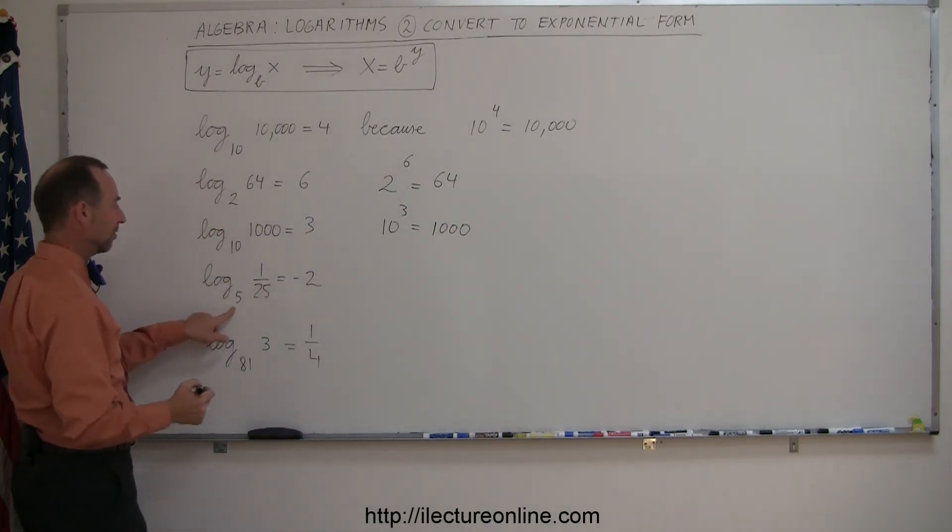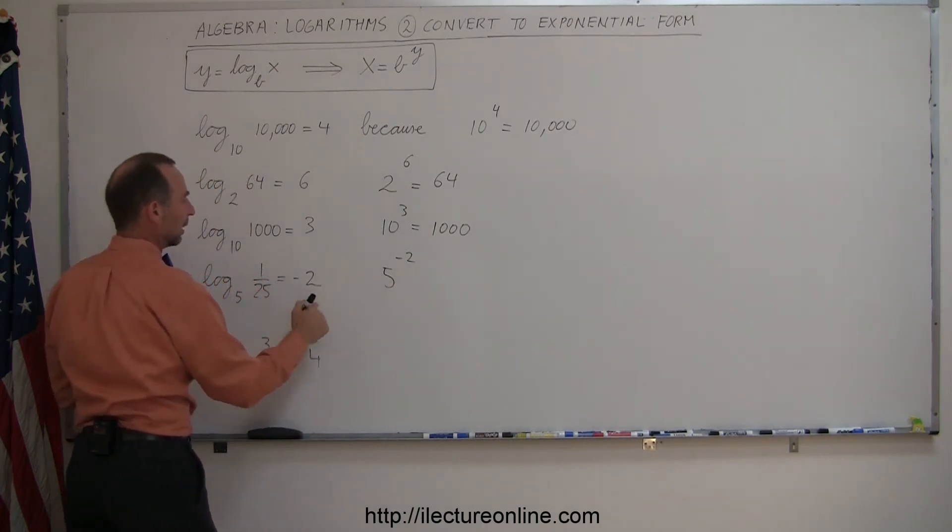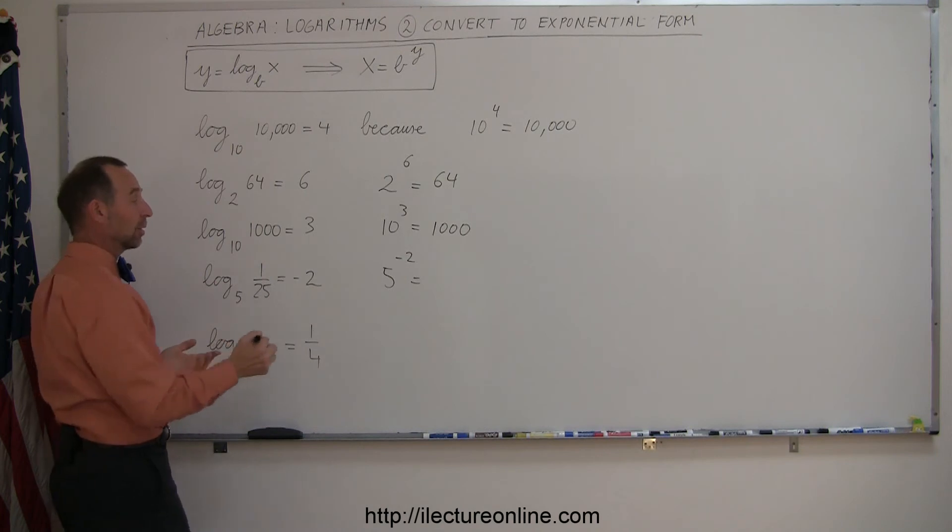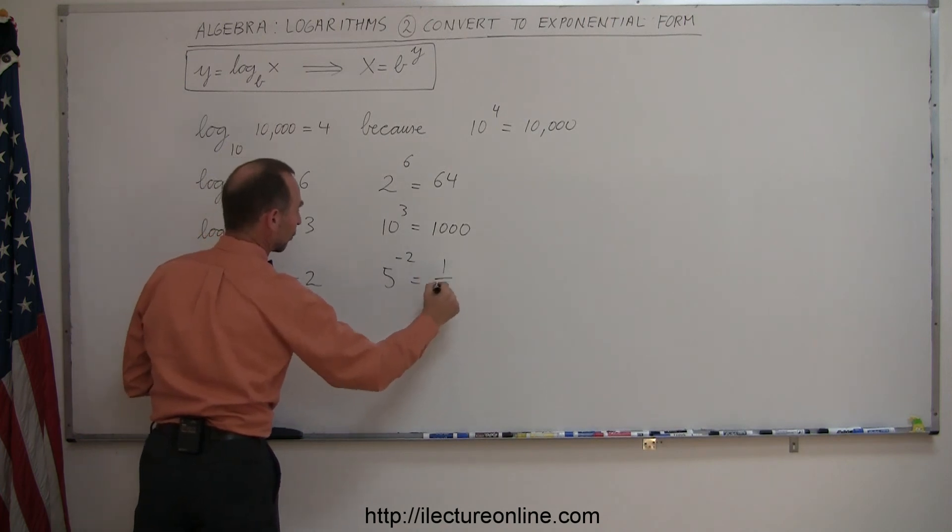And over here, we take the base and raise it to the minus 2 power. So we raise it to this power right here, and that should equal 1 over 25, which it does because 5 to the minus 2 is the same as 1 over 5 to the 2nd power. 5 to the 2nd power is 25, so that's 1 over 25.